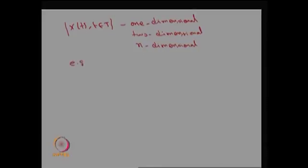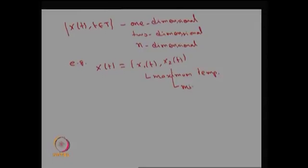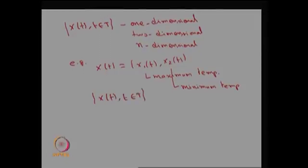Let me give a simple example of a two-dimensional stochastic process. Here, the random variable x(t) is a vector (x1(t), x2(t)), where x1(t) is the maximum temperature and x2(t) is the minimum temperature of a place at any time t. Together, this forms a random vector consisting of two random variables x1(t) and x2(t), making this a two-dimensional stochastic process.